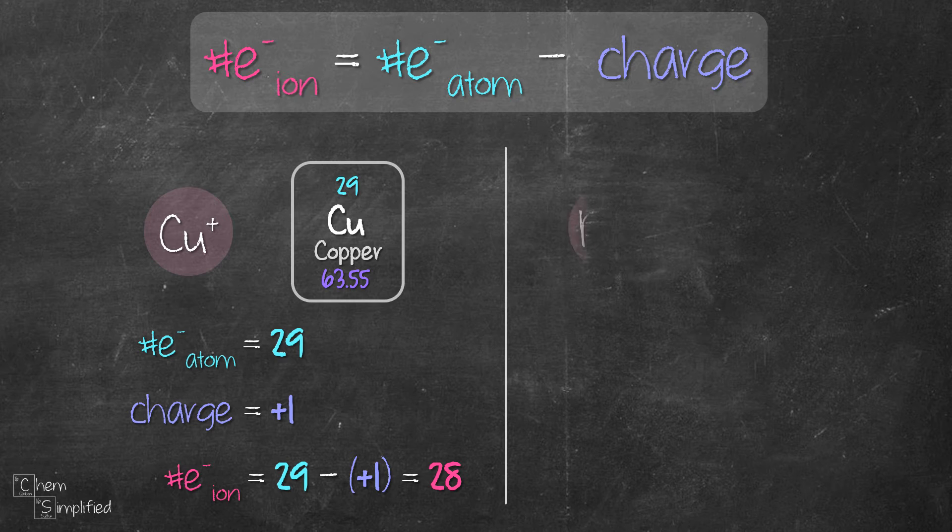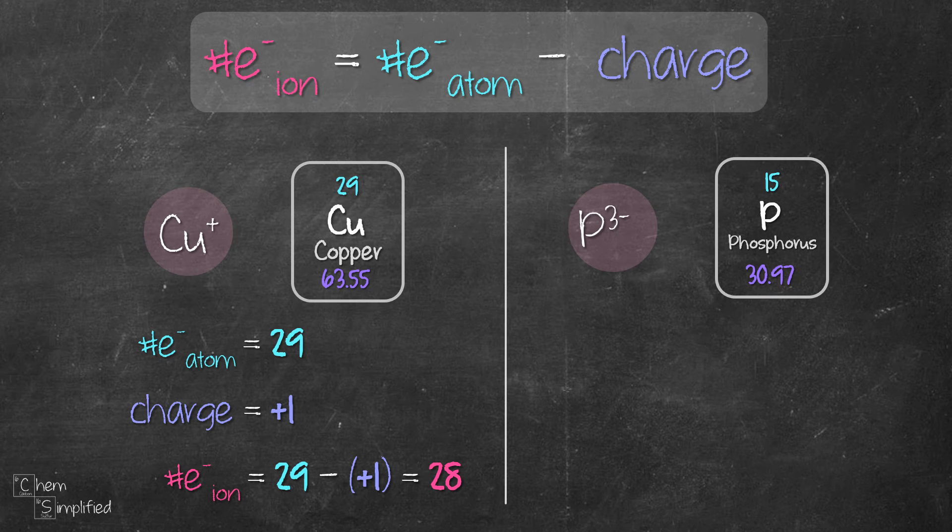Let's try working with an anion, P3- which is phosphide ion. From the periodic table, we can find the atomic number of phosphorus, which is 15. That means the number of electrons for phosphorus atom is 15.